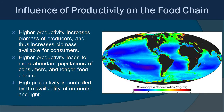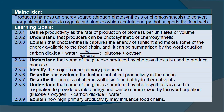To wrap this up, there's a huge influence of productivity on the food chains and food webs we'll talk about throughout the course. Higher productivity increases biomass of producers and thus increases the biomass available for consumers — the more productivity, the more life you have in an area. Higher productivity leads to more abundant populations of consumers and longer food chains, and in fact the ocean tends to have longer food chains than on land. High productivity is controlled by the availability of two things: nutrients and light — two very important concepts to remember. Producers harness an energy source through photosynthesis or chemosynthesis to convert inorganic substances to organic substances, which contain energy that supports the food web.